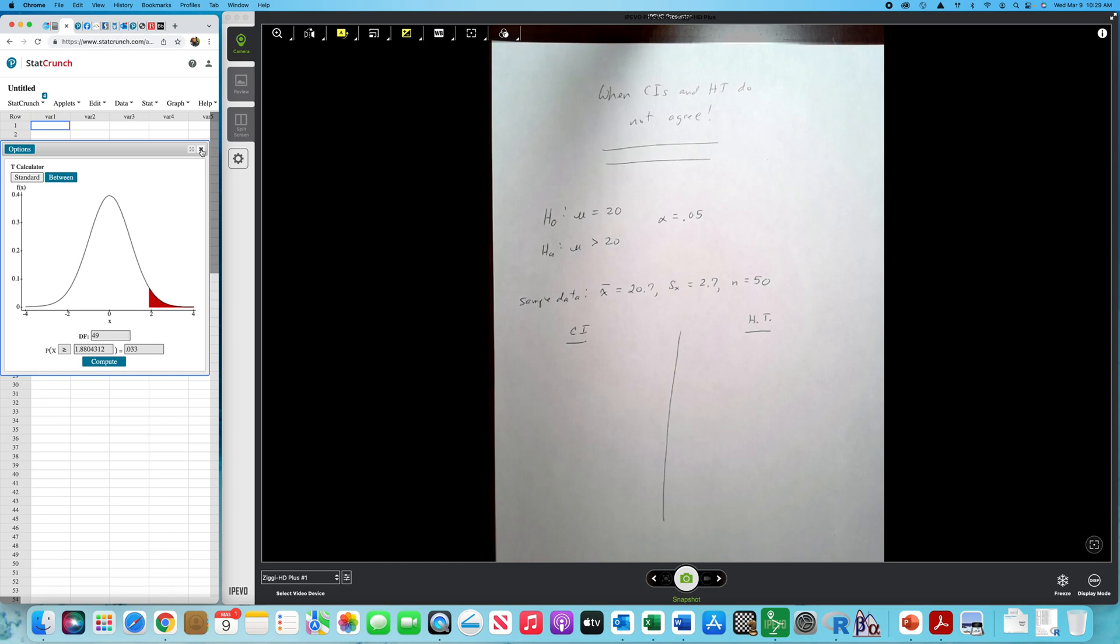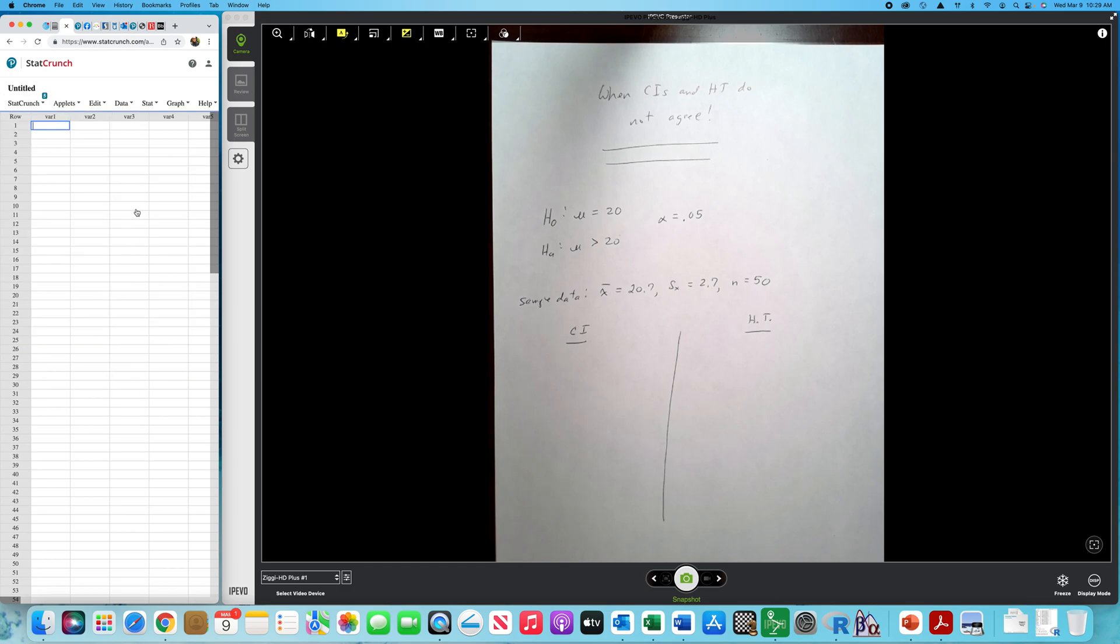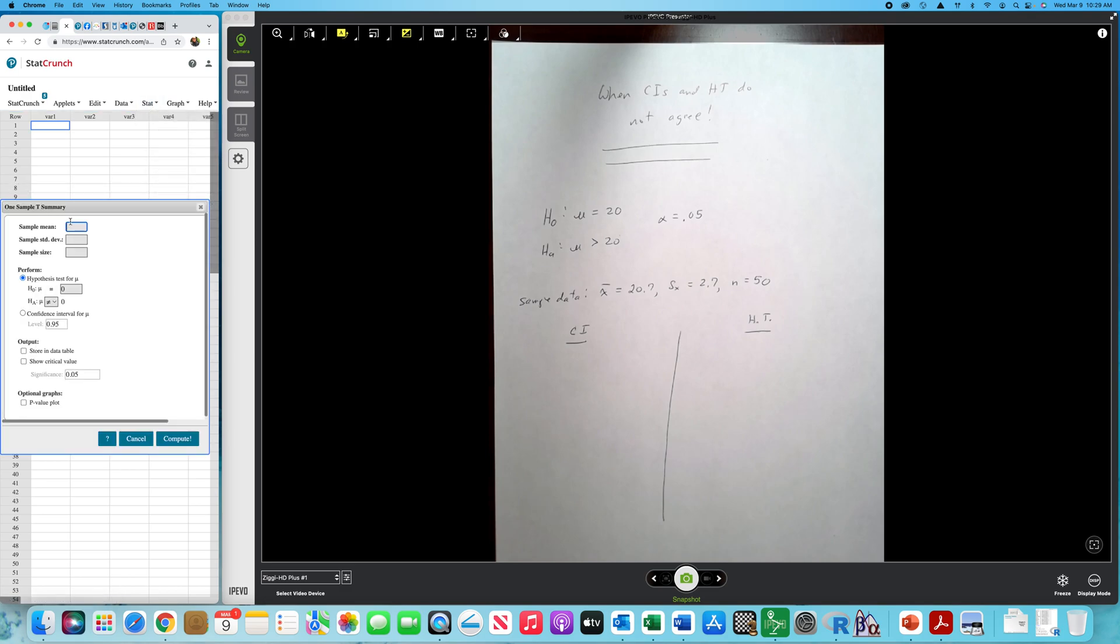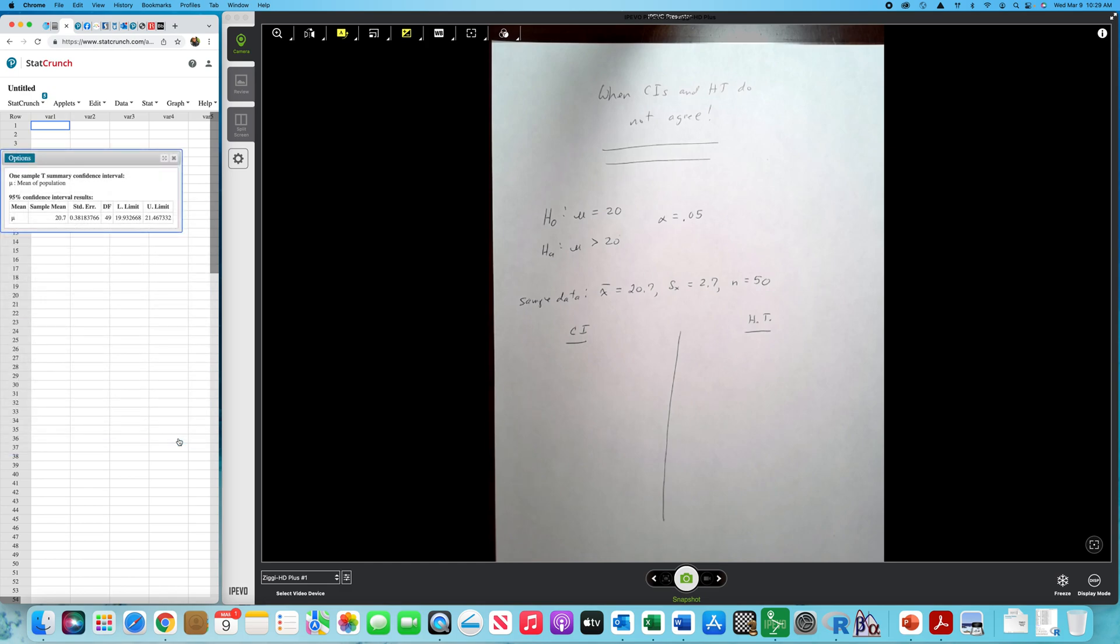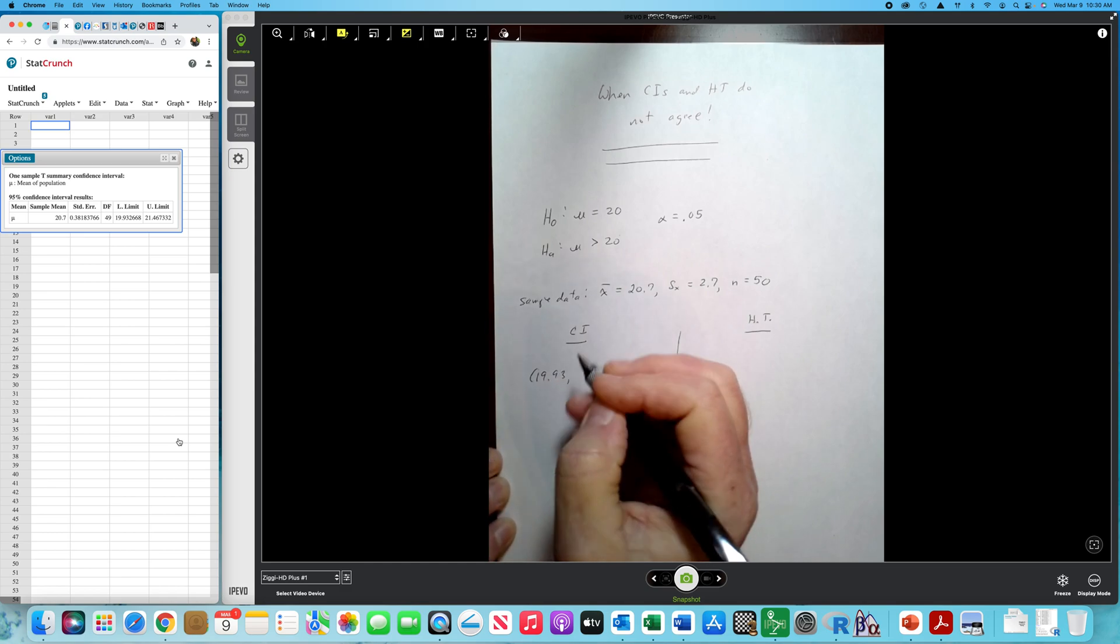You can still have the information from the previous video. So if I was going to work a confidence interval for this problem, I would go to t-stat and with summary, type in the information. I should have already had this done. I think you're more likely to play along with me if I don't. Our sample size is 50. So if I want a confidence interval, 95%, I don't need the Z-critical. Let's just get the confidence interval. So this is going to run from 19.93 to 21.47.